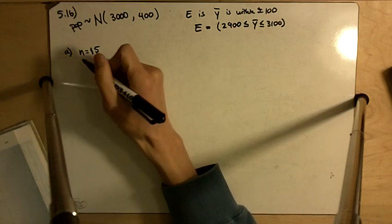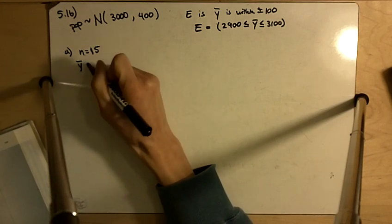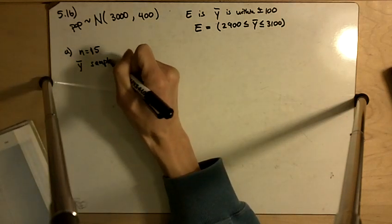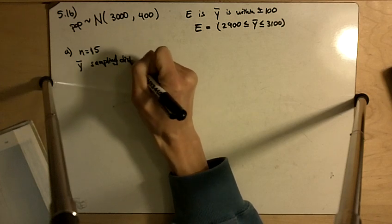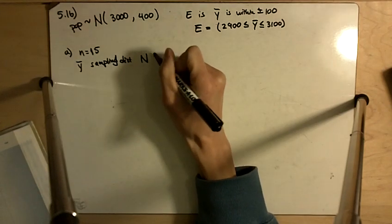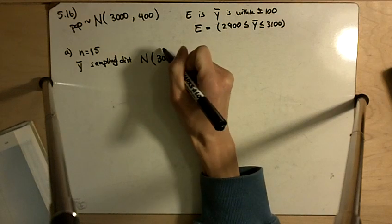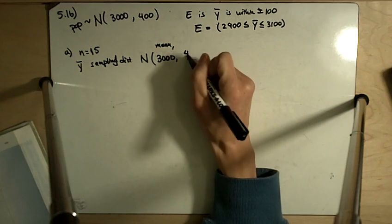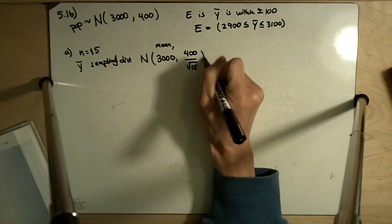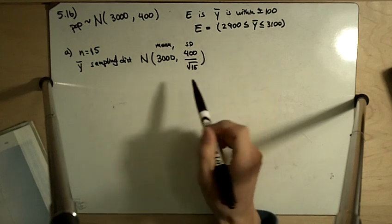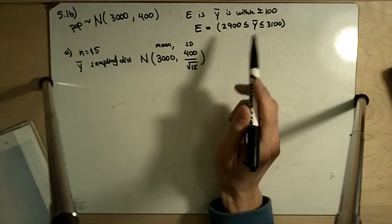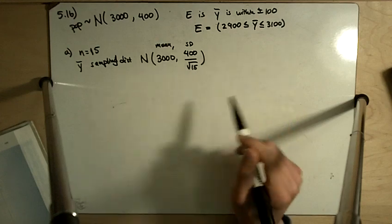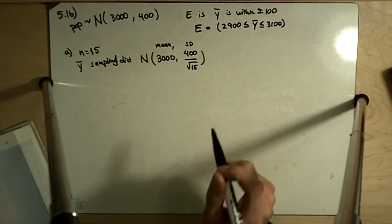So with N equals 15, Y bar will have a sampling distribution. That's going to have the same mean as before, 3000, and our standard deviation is going to be 400 divided by the square root of 15. We're not looking at individuals, but we're looking at samples of size 15. We don't care about each individual in the sample, we're just combining them all into one number, and that's the sample mean.